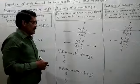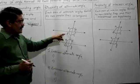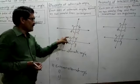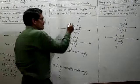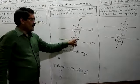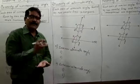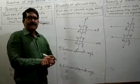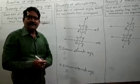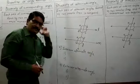Next, the property for alternate angles. There are two types: interior alternate angles and exterior alternate angles. Interior means inside the lines; alternate means on alternate sides of the transversal. Angle D and angle F, angle C and angle E are the interior alternate angles. Angle A and angle G, angle B and angle H are the exterior alternate angles. The property of alternate angles is that each pair of alternate angles formed by two parallel lines are congruent.